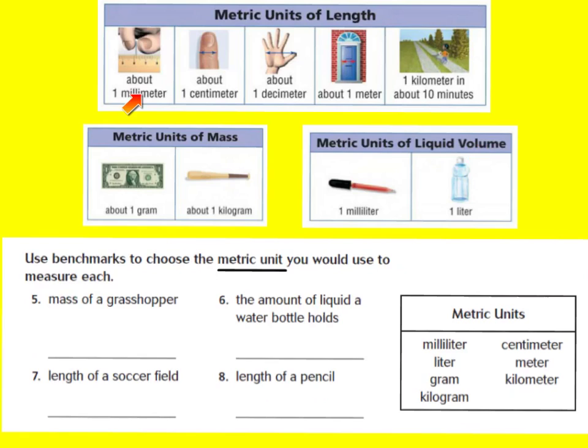The millimeter is very, very tiny. If you look on a ruler on the centimeter side, between two centimeters you'll see little tiny lines — there are actually ten of those inside of the centimeter. So one of those tiny pieces would be considered a millimeter. Now the centimeter is about the width of a finger.